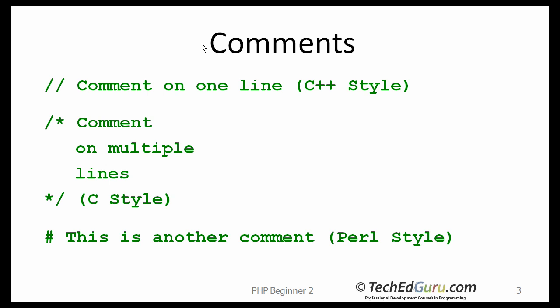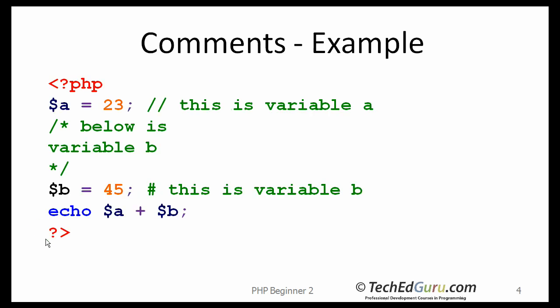In PHP, the code can be commented three different ways. You can have what is called the C++ style comment — you start with two slashes, and everything on the remaining line is treated as a comment. Or the C style comment, which starts with slash and an asterisk and ends with the matching characters. Or the Perl style comment, which starts with the pound sign. Here are a couple of examples showing PHP code with comments, although they are not necessarily very useful comments.